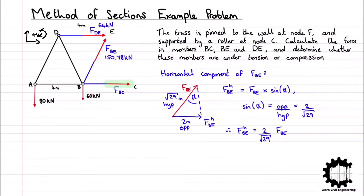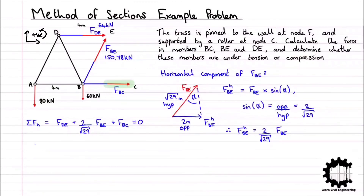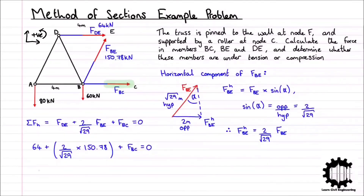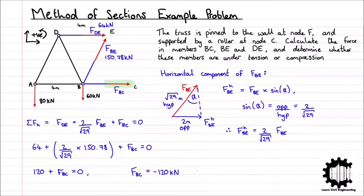Taking the x-coordinate direction to be positive, the sum of all horizontal forces equals FDE + (2 / √29) × FBE + FBC = 0. Substituting our calculated values: 64 + (2 / √29) × 150.78 + FBC = 0, which gives 120 + FBC = 0, so FBC = −120 kN. As we assumed the internal force to be tensile and our value for FBC is negative, the force of 120 kN in member BC is compressive.